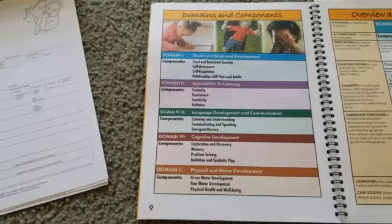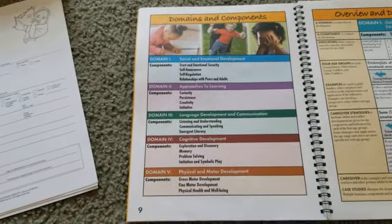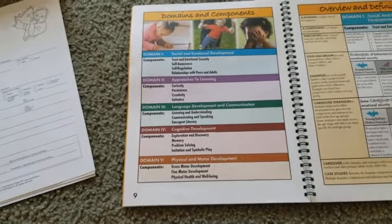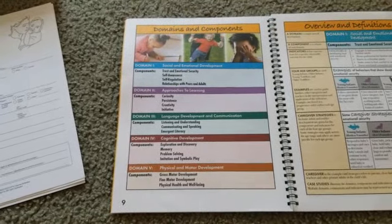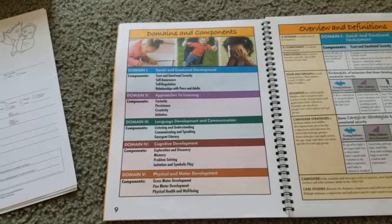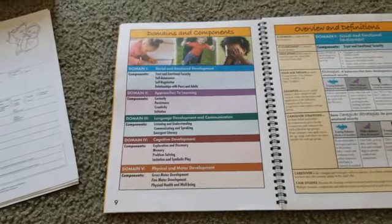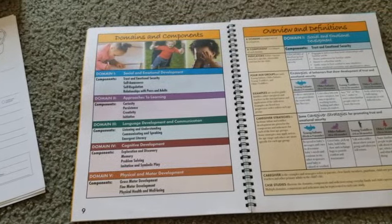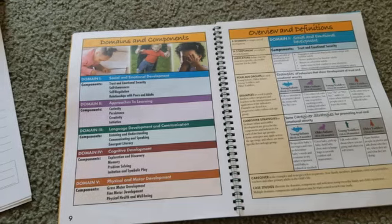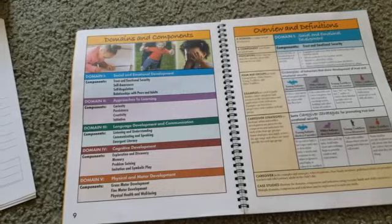You'll probably see some others that also discuss math, reading, and literacy — all those types of things. Those are also important and you can look those up and find out what the components of those other developmental milestones are. I'll leave in the description a very comprehensive list of developmental milestones, what to look for, and some activities and things to do with your children.